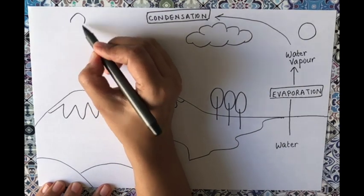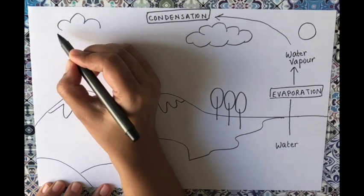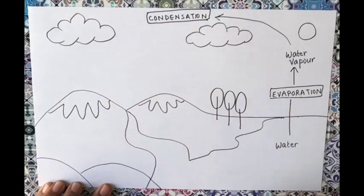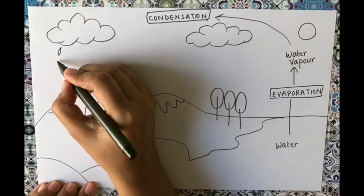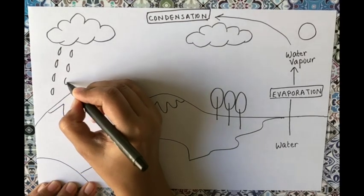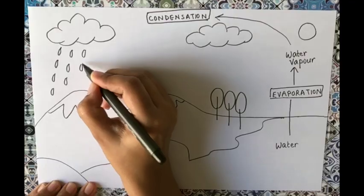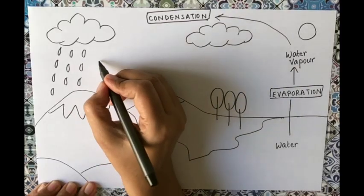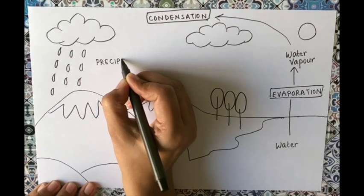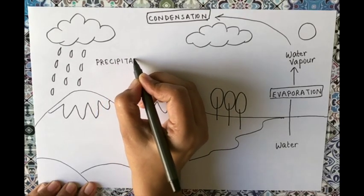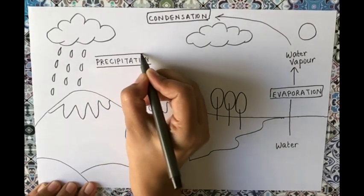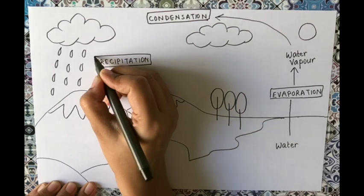These tiny droplets of water get collected in what we see as clouds. So clouds are nothing but a collection of tiny water droplets formed by condensation. As clouds keep getting filled up with tiny water droplets, eventually the cloud becomes heavy and it pours all the collected water down. This process is called precipitation.